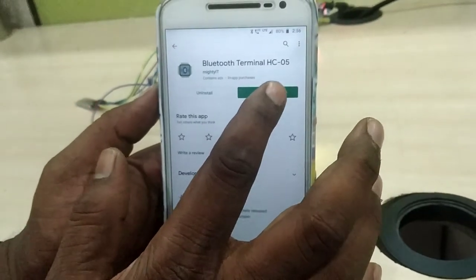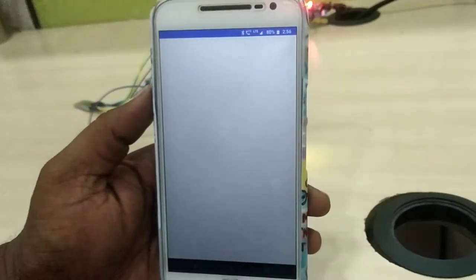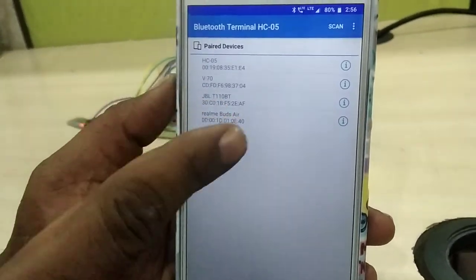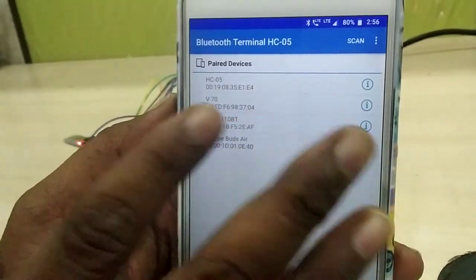Once you install the app, you will get home screen like this. It will show you the default Bluetooth devices around you.